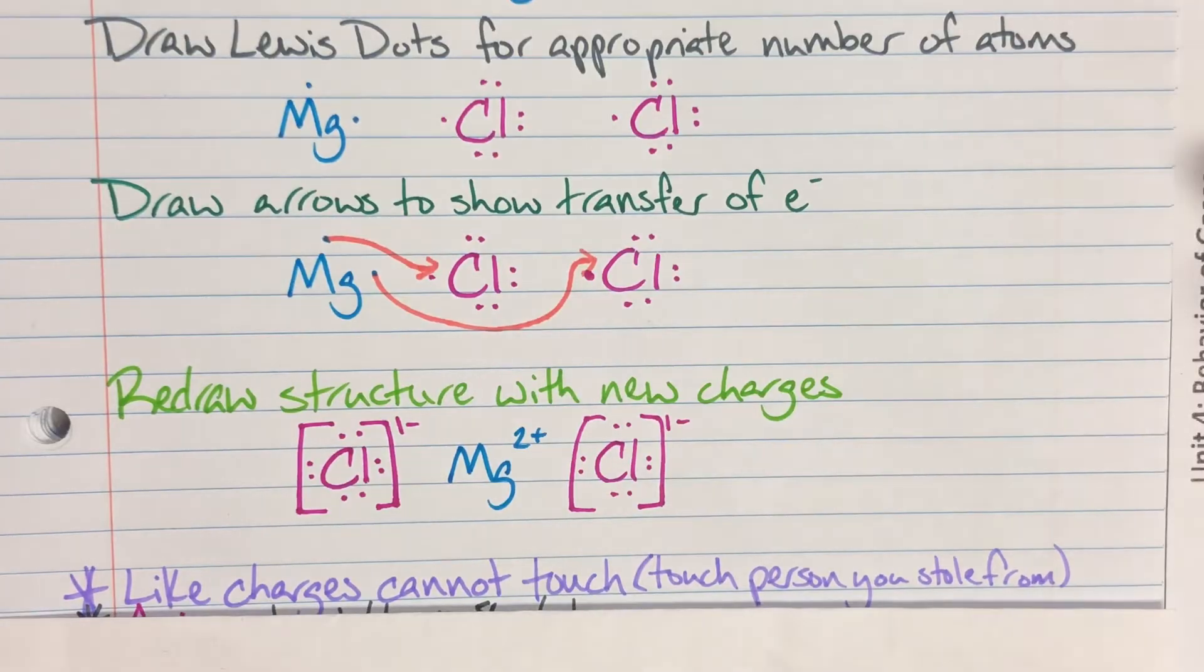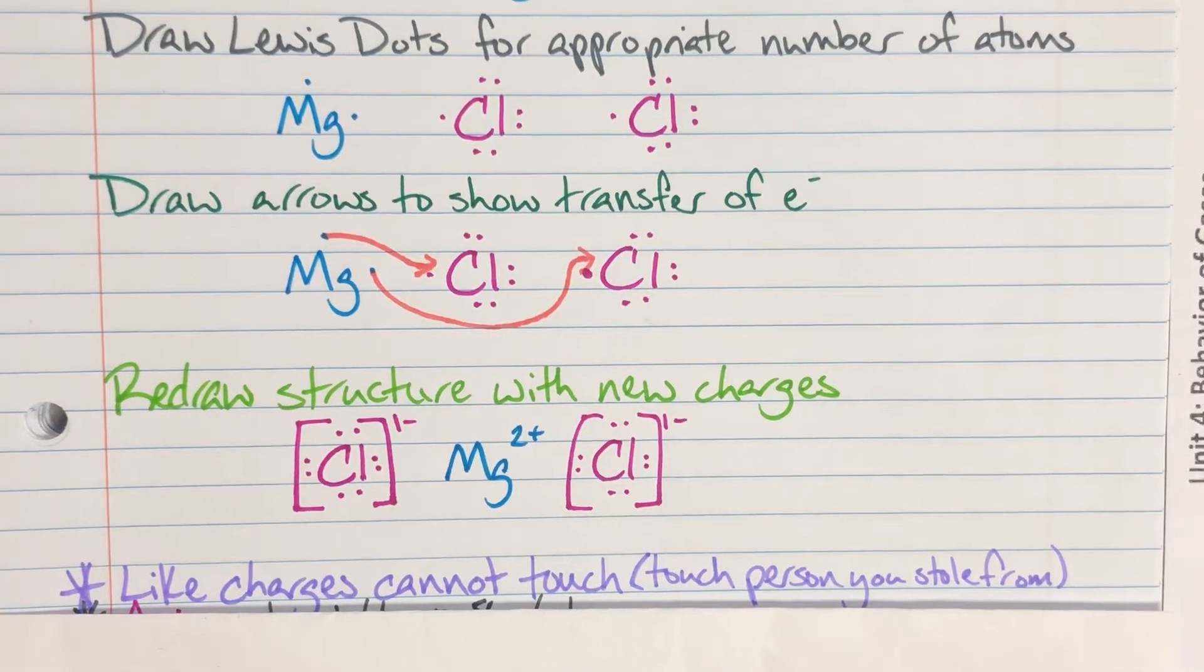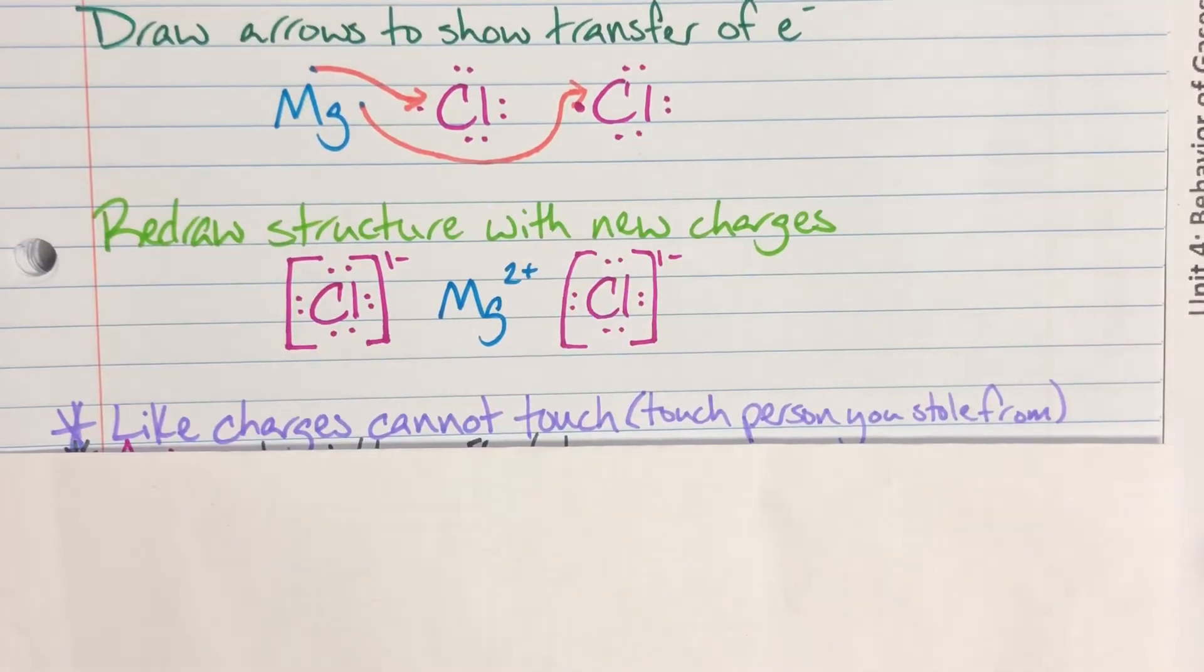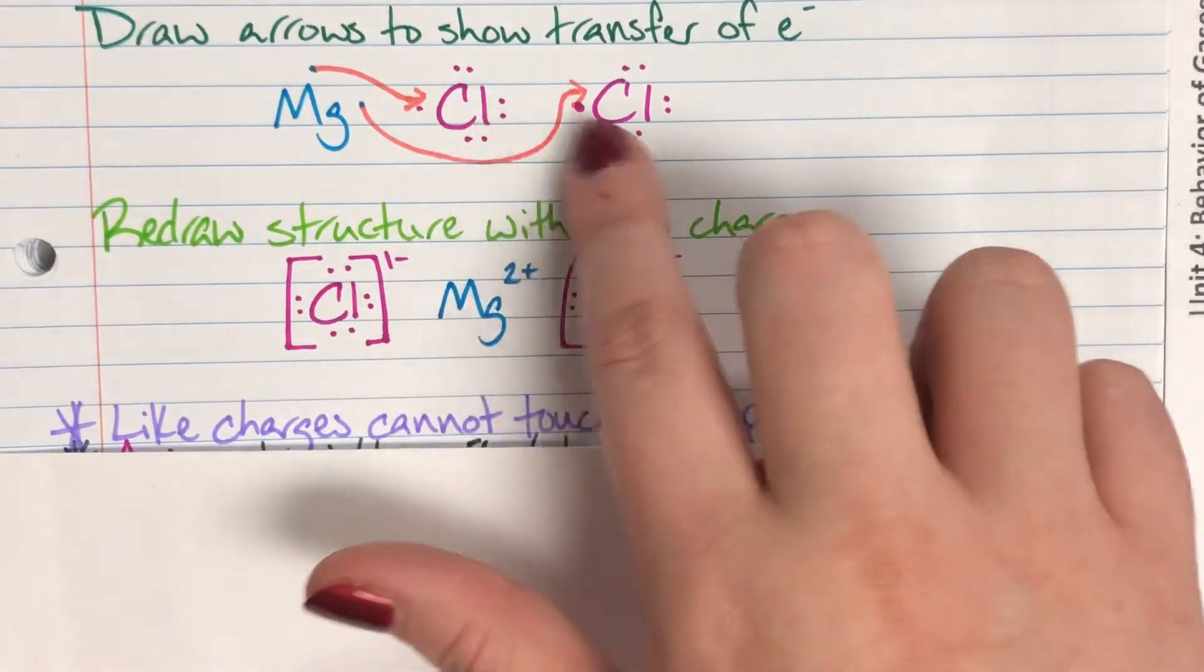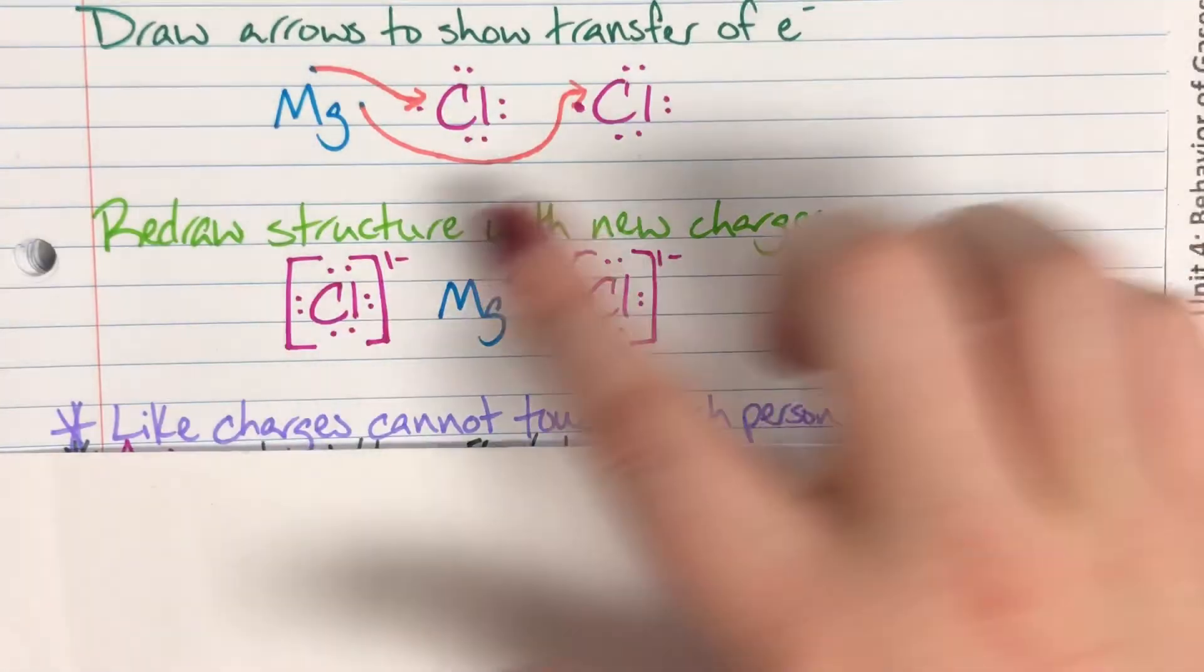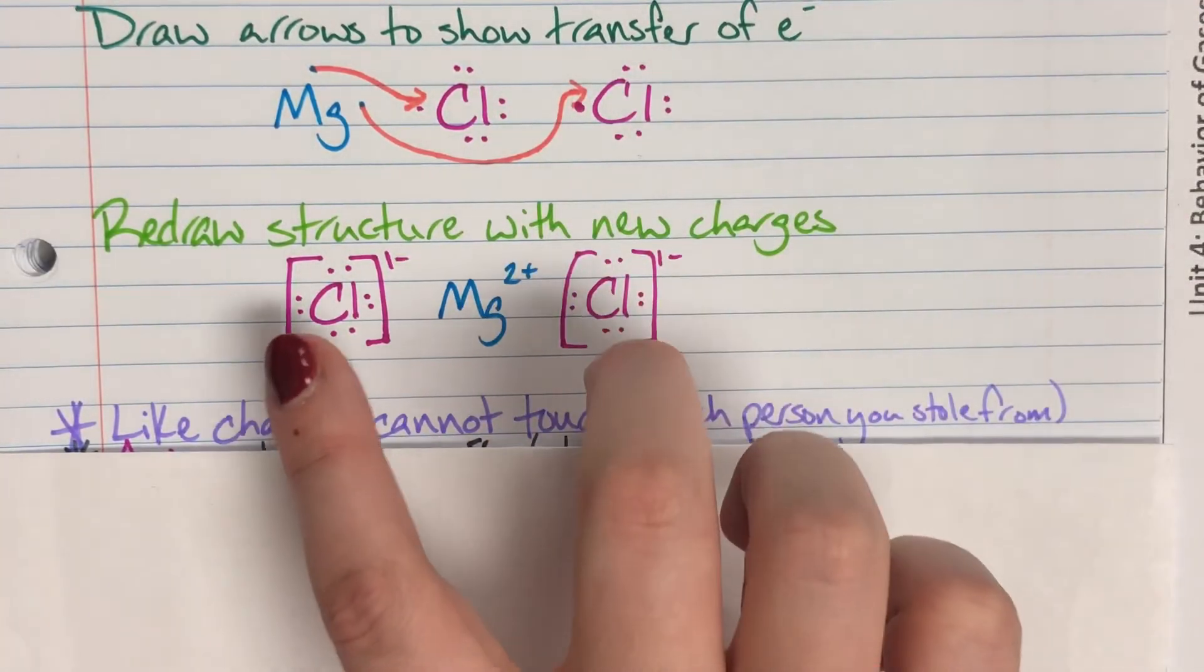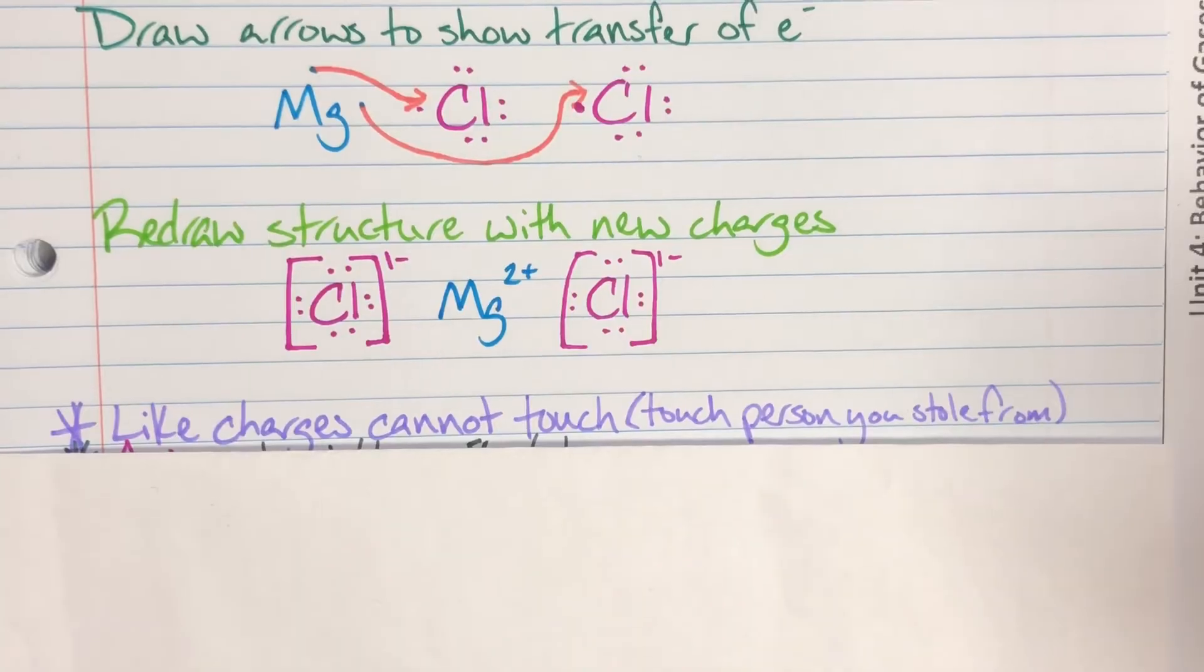We do have some general rules for ionic Lewis structures, and the first of which is going to be that like charges cannot touch. Like charges are going to be similar in positive or negative, and so I cannot have two positives touching each other, nor two negatives touching each other. You'll notice that whenever I actually wrote this out, I moved my chlorine away from next to each other, and I put them on opposite sides of magnesium so that they wouldn't touch.